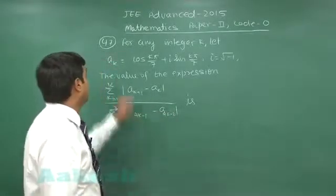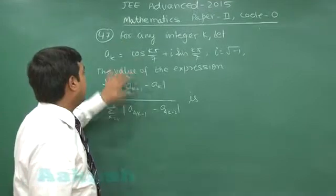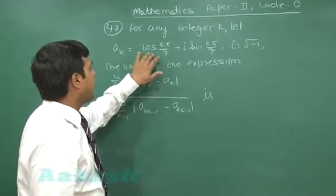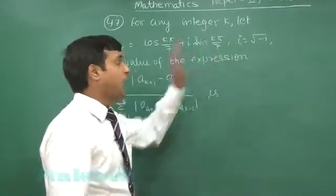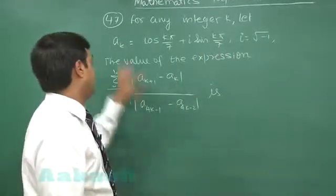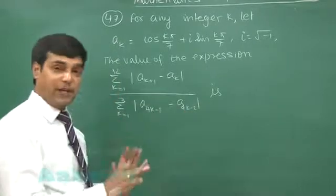Question number 47. For any integer k, let a_k equals cos(kπ/7) plus iota sin(kπ/7), where i is root minus 1. The value of the expression, this one we have to obtain.